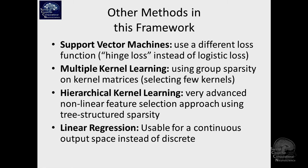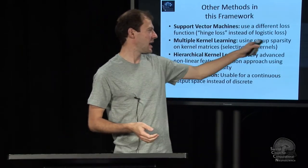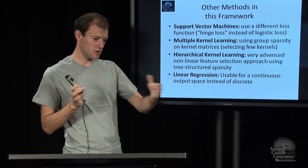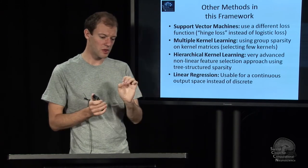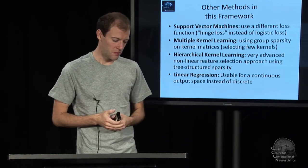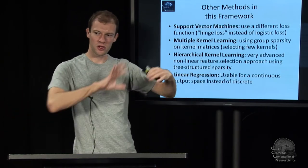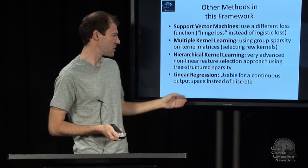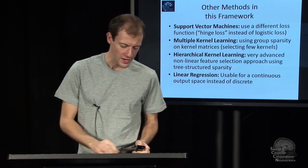So there is multiple kernel learning, which instead of covariance matrices as we did here, it uses kernel matrices. And might have group sparsity applied to the kernel weights and so on. There's hierarchical kernel learning, which is really advanced. It learns small numbers of non-linear features, basically. Linear regression is in that. In that case, it becomes even simpler. You can drop most terms and it boils down to a quadratic optimization problem. So there's a whole range of things that you can understand from this viewpoint.